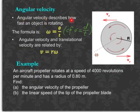Angular velocity describes how fast an object is rotating. The formula is ω = θ/t, compared to this familiar formula that you all know, v = d/t. Instead of v you have ω, instead of d you have θ.